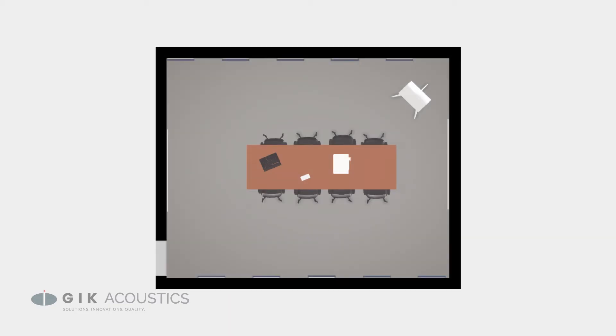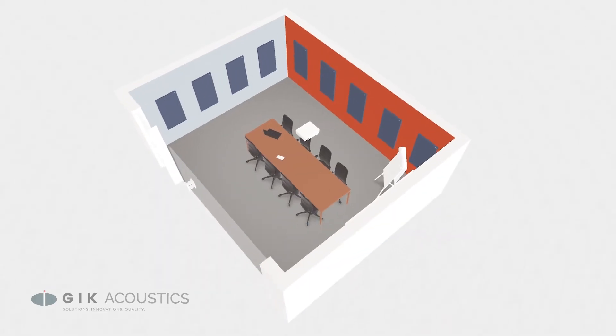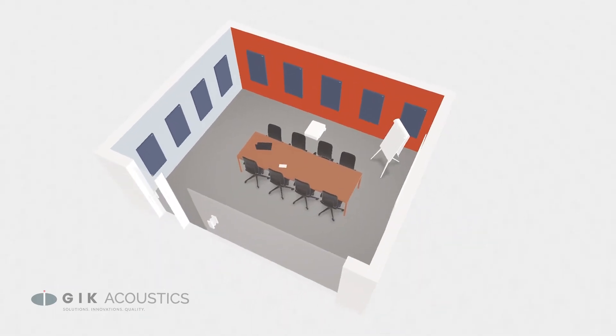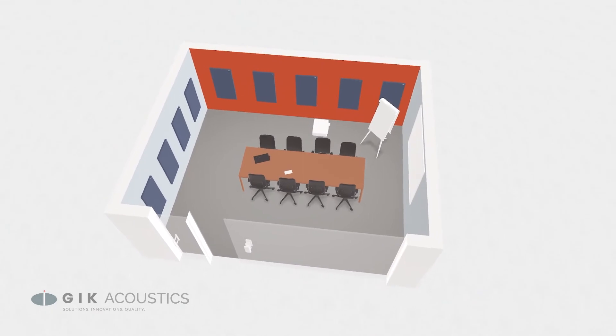Alternating panels across parallel walls is a great strategy for maximizing the effect of your panels. If you don't have enough panels to cover every wall, make sure each set of parallel walls has at least one treated wall to avoid slap echo.